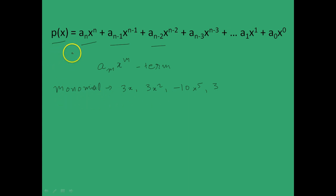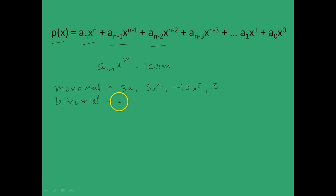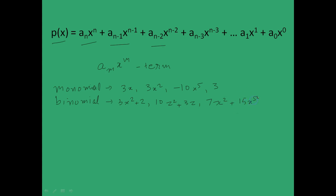If the polynomial contains two terms, then it is called a binomial. Examples of binomials are 3x squared plus 2, 10z squared plus 3z, 7x squared plus 15x to the power 5, etc.